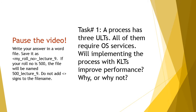Pause the video, write your answer in a word file, and save it as your roll number underscore lecture underscore nine task number one. Task: A process has three ULTs, all of which require operating system services. Will implementing the process with KLTs improve performance? Why or why not?